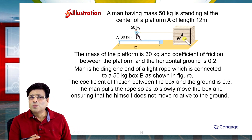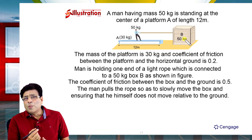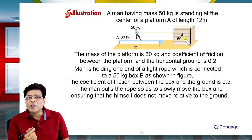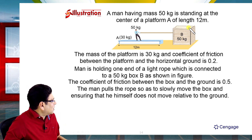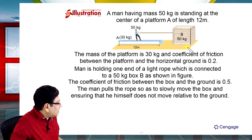The box is sliding with respect to the ground, so the friction between the box and ground should be kinetic. Since the box moves slowly, there is no acceleration of the box. That means the tension generated will balance the friction force between the ground and the box.